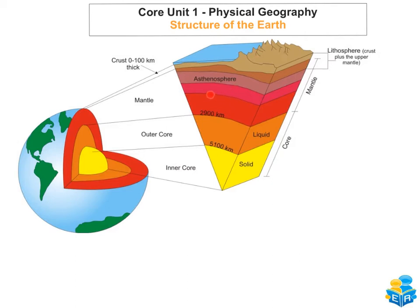Part of the mantle is known as the asthenosphere, which is the top part of the mantle. The rocks in the asthenosphere are much weaker and almost molten — they can easily change and are capable of flowing. Within the asthenosphere you have convection currents, which explains why the tectonic plates actually move.